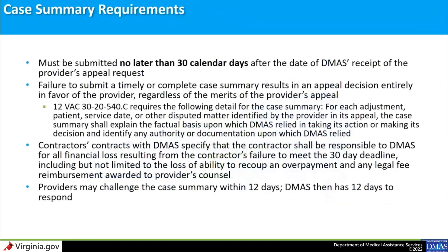A case summary is due 30 calendar days after an informal provider appeal request is received by the appeals division. If a complete case summary is not submitted by the case summary deadline, the appeal decision will be a finding entirely in favor of the provider, regardless of the merits of the provider's appeal. Contractors who represent DMAS are contractually responsible to DMAS for any financial loss resulting from a failure to meet the 30-day case summary deadline, including any lost overpayment recoupments or legal fees for the provider's counsel.